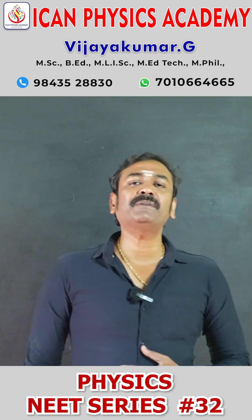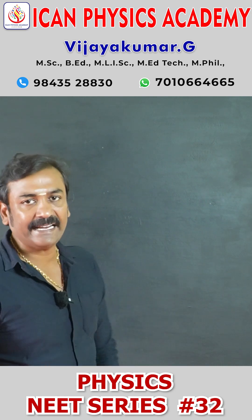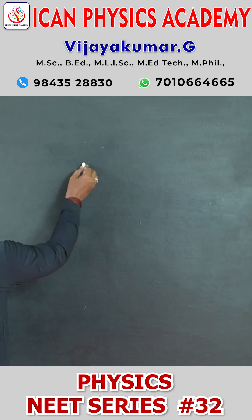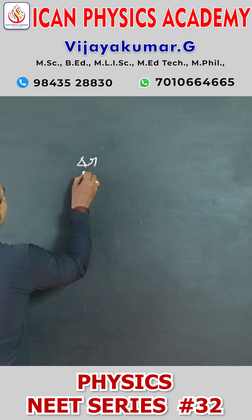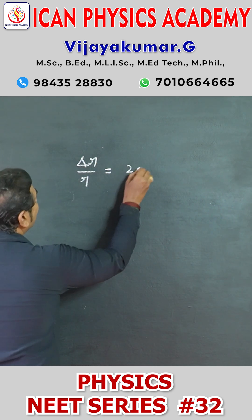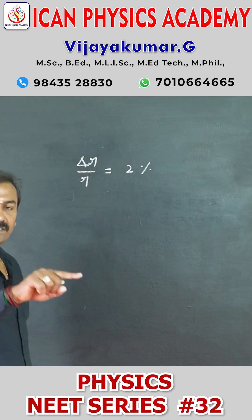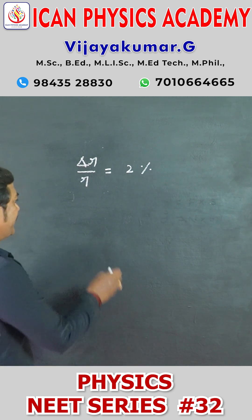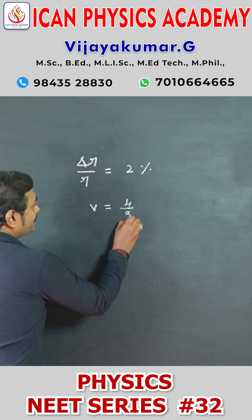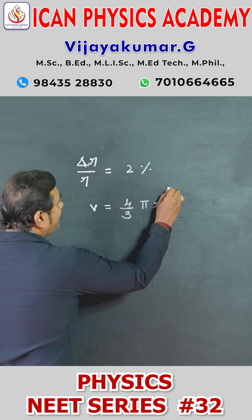The measurement of error in the radius is 2%. So measurement of error in radius, that is delta r by r, equals 2%. The formula to calculate volume of the sphere is 4 by 3 pi r cube.